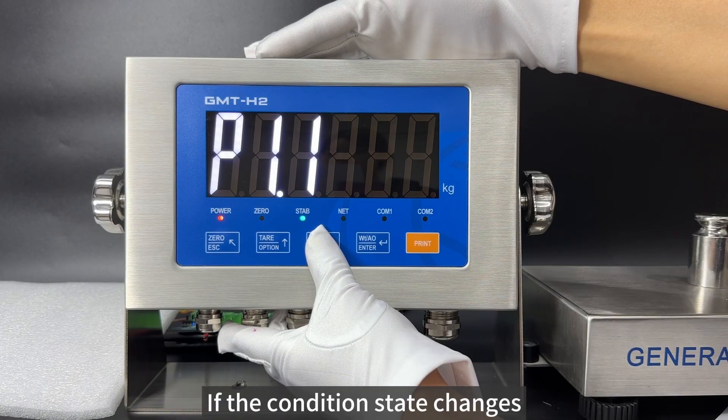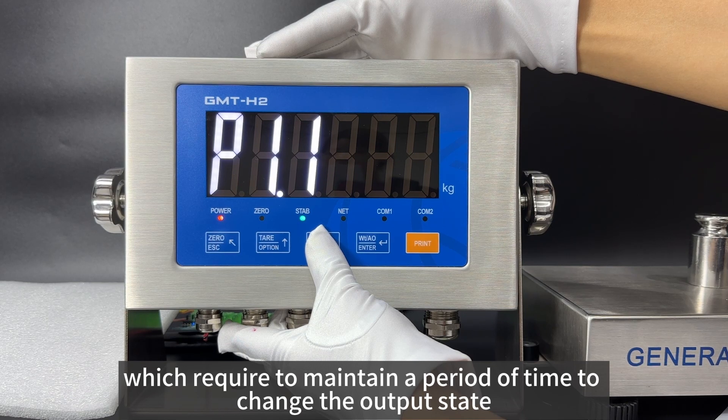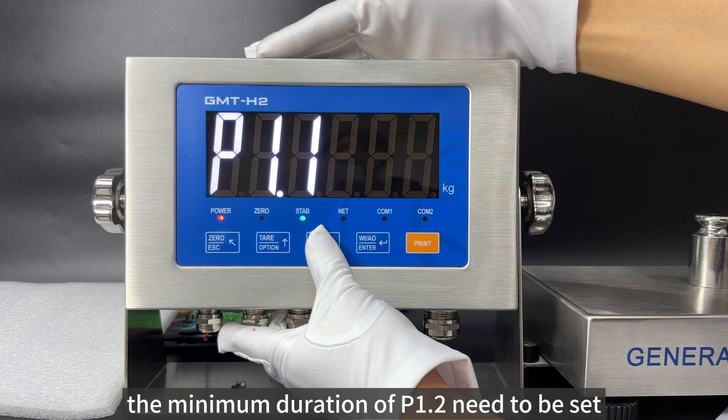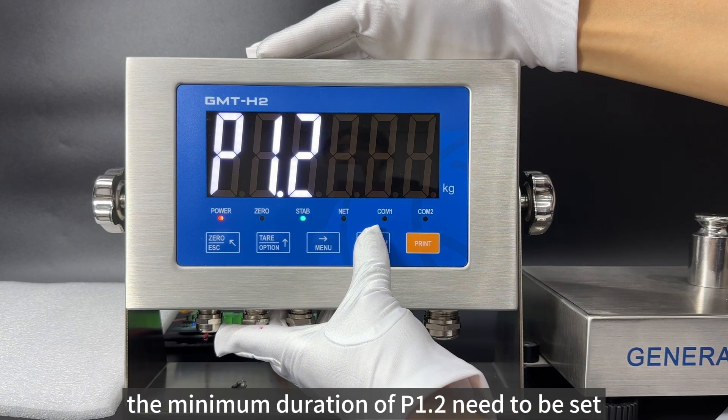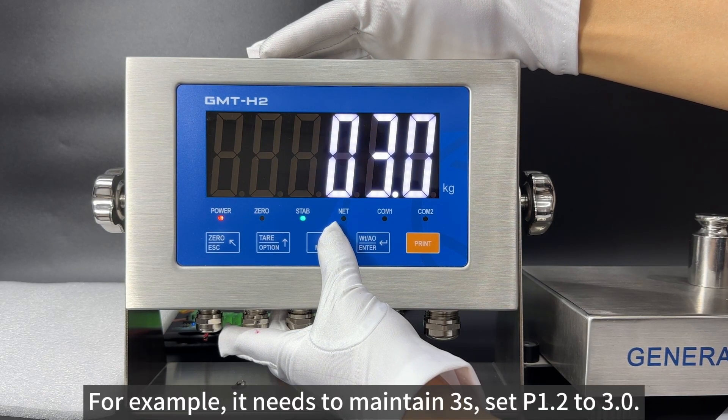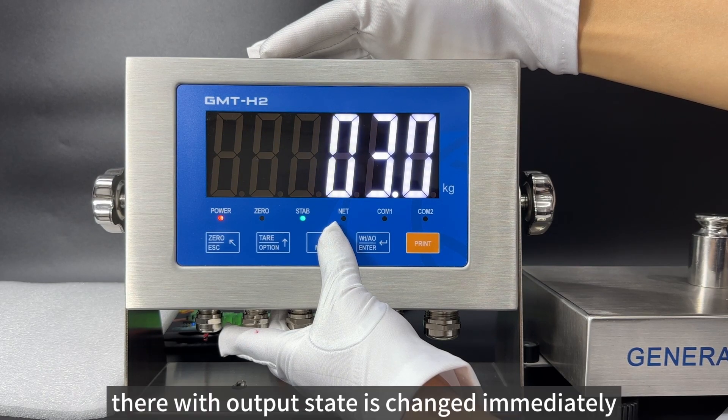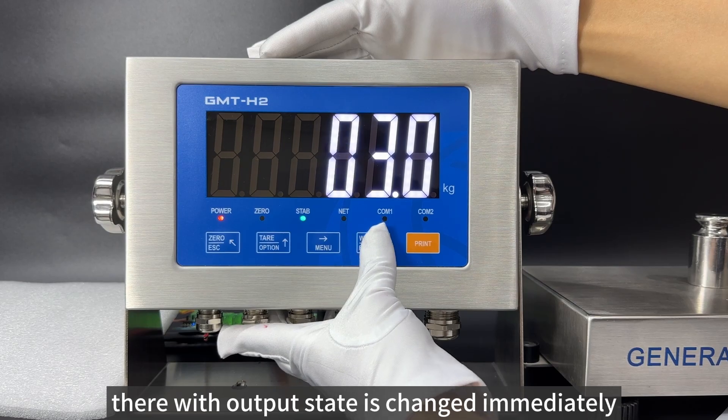If the condition state change requires maintaining a period of time to change the output state, the minimum duration of P1.2 needs to be set. For example, if it needs to maintain 3 seconds, set P1.2 to 3. Set to 0 means when the condition state changes, the output state is changed immediately.